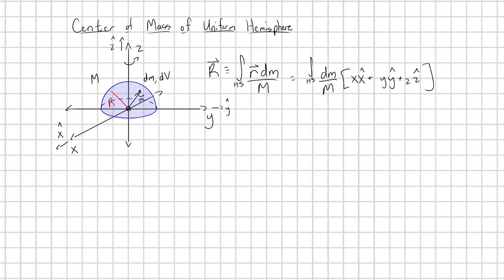My center of mass of this hemisphere is going to be located somewhere on the z-axis. So the x-hat component must be zero, and the y-hat component must also be zero. So really, we just have to integrate over my hemisphere of z dm over m in the z-hat direction.